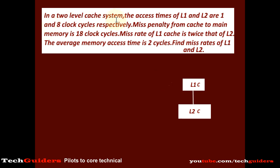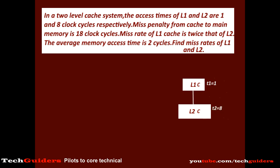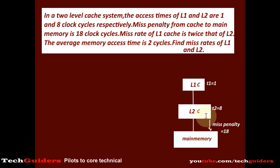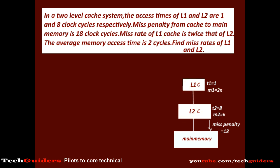We have a 2-level cache system with L1 and L2 caches. The access times are 1 clock cycle for L1 and 8 clock cycles for L2. The miss penalty from the cache to main memory is 18 clock cycles. The miss rate of L1 is twice that of L2, so we let M2 equal X, hence M1 equals 2X.